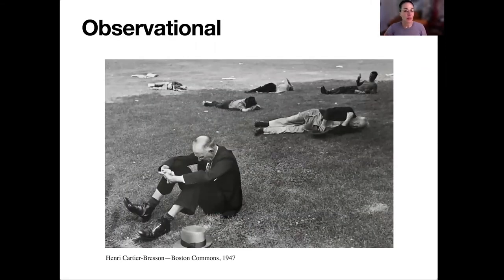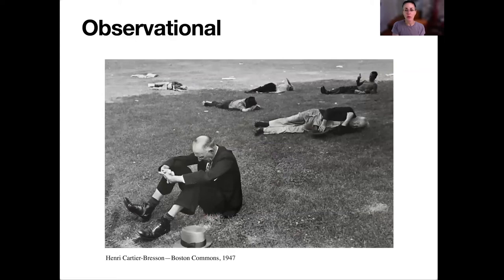This is Cartier-Bresson. So this is observational — no one's looking at him; for the most part this is an observation he made. We're working with pattern, we're working with form, we're working with diagonals, shape, light, and dark. Cartier-Bresson is the master — he started all of this. If you're interested in street photography, I urge you to look at Cartier-Bresson's work.